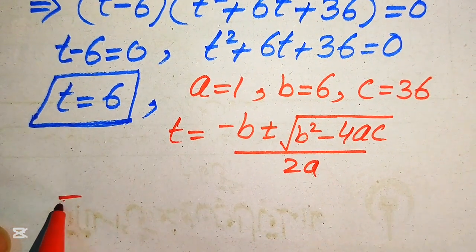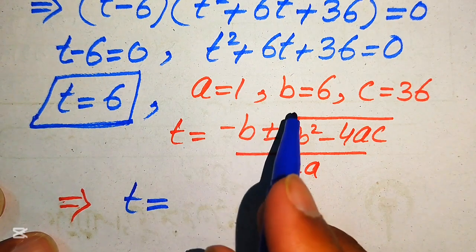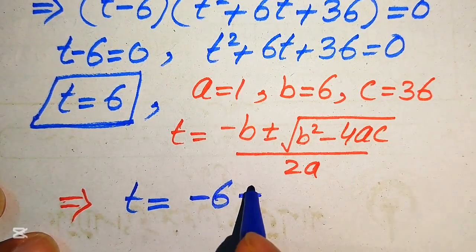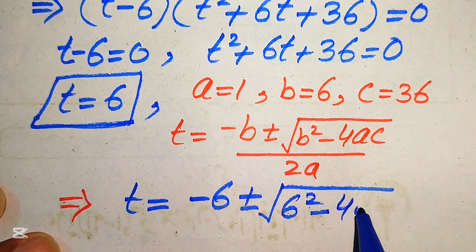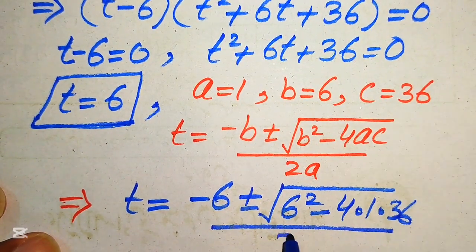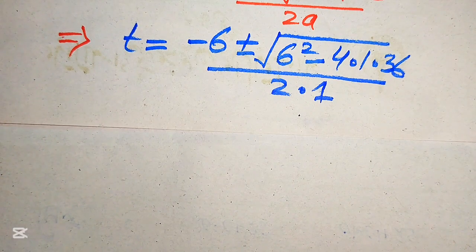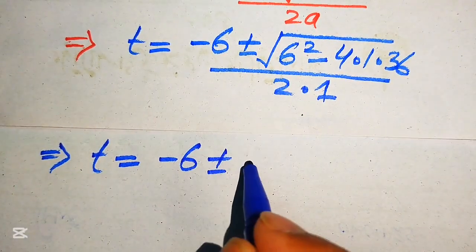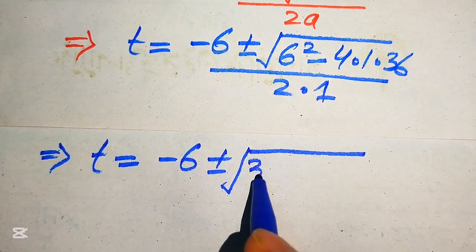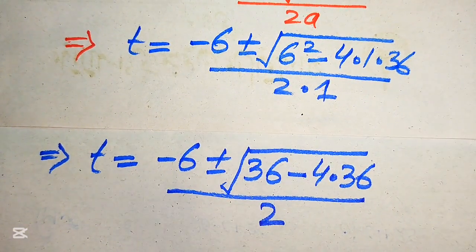Now we substitute the values of a, b, and c into the formula. It becomes t equals negative 6 plus or minus the square root of (6 squared minus 4 times 1 times 36), divided by 2 times 1. In the next step, this simplifies to t equals negative 6 plus or minus the square root of (36 minus 144), divided by 2.